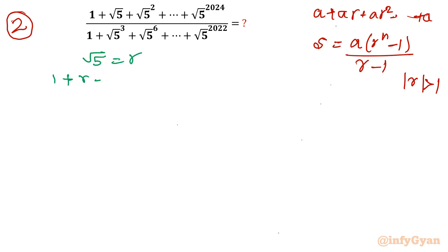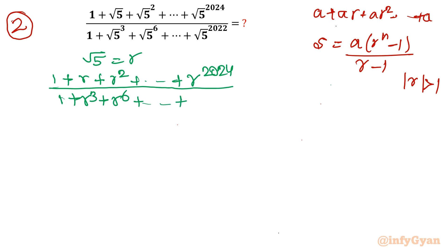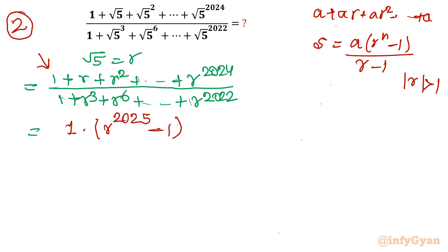So the expression is (1 + r + r² + ... + r²⁰²⁴) / (1 + r³ + r⁶ + ... + r²⁰²²). For the numerator: first term is 1, common ratio is r, and the number of terms is 2025. So the numerator sum = 1·(r²⁰²⁵ − 1)/(r − 1). For the denominator: first term is 1, common ratio is r³, and the number of terms is 675 (since 2022/3 = 674, plus one extra term = 675). So the denominator sum = 1·((r³)⁶⁷⁵ − 1)/(r³ − 1).